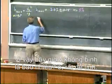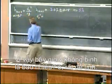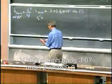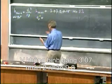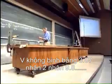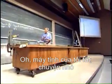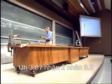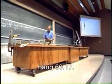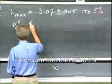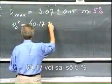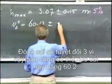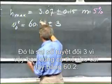So what now is V zero squared? That's easy to calculate now. V zero squared equals 3.07 times 2 times 9.8. My calculator was off — that's a detail. 3.07 times 2 times 9.8 is 60.17. I'd like you to check that. 60.17 plus an error of 5% — that is an error of 3. So you might as well make this 60.2.